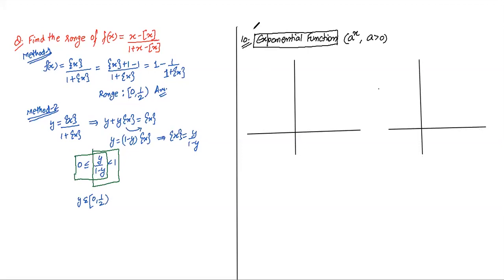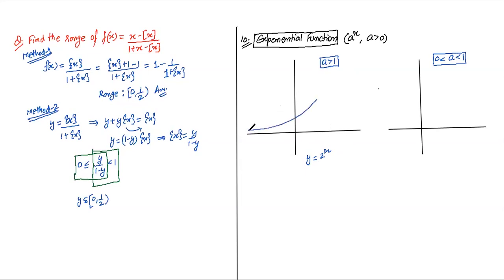The graph of Aˣ depends on whether A > 1 or 0 < A < 1. If A > 1 (e.g., y = 2ˣ): the graph is increasing, passes through (0,1) since A⁰=1. If 0 < A < 1 (e.g., y = (1/2)ˣ): as x increases, the value decreases (1/2, 1/4, 1/8...), so the graph is decreasing, also passing through (0,1). Both graphs lie entirely above the x-axis.